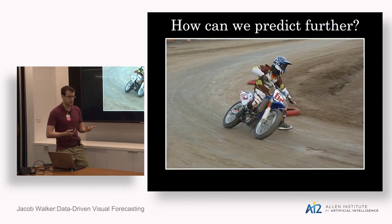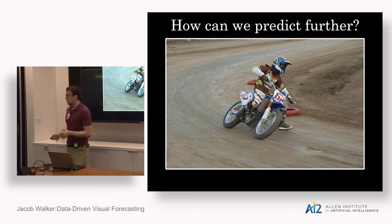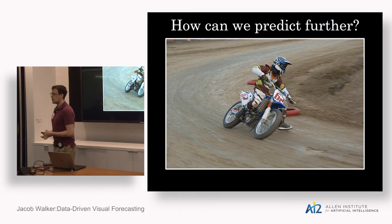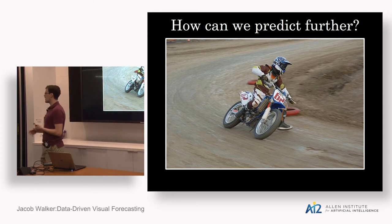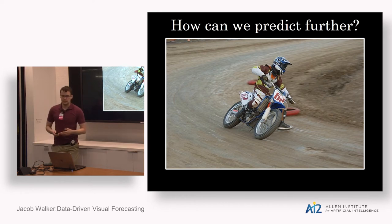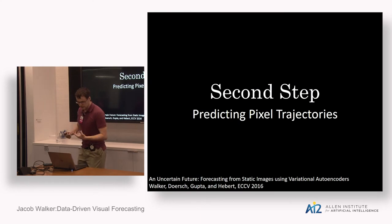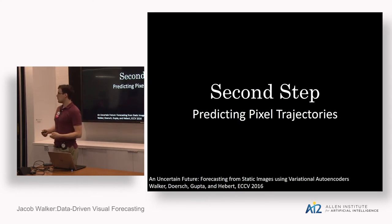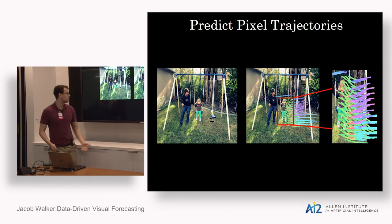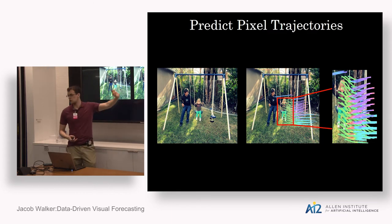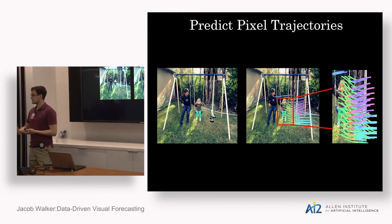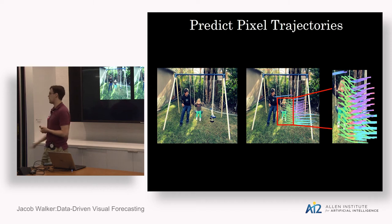We can forecast motion in a single instant, but how could we predict further in time — not only how an object moves in the next instant, but where it will be in the next second? This leads to the second step: predicting pixel trajectories. We can think of this as a generalization of optical flow: instead of tracking a pixel over the next frame, we track pixels over 30 frames, understanding a path of pixels through space-time. We can obtain these labels using improved dense trajectories — originally a framework for action recognition — in a self-supervised way.